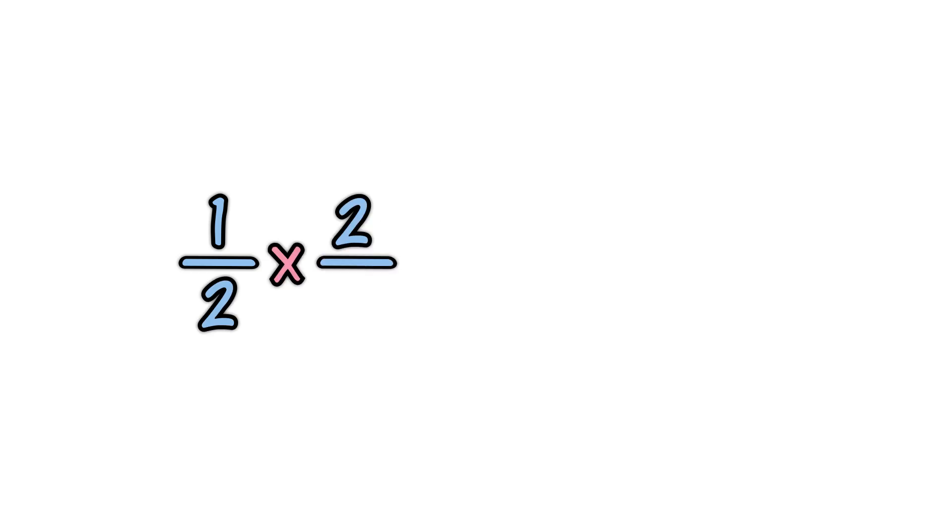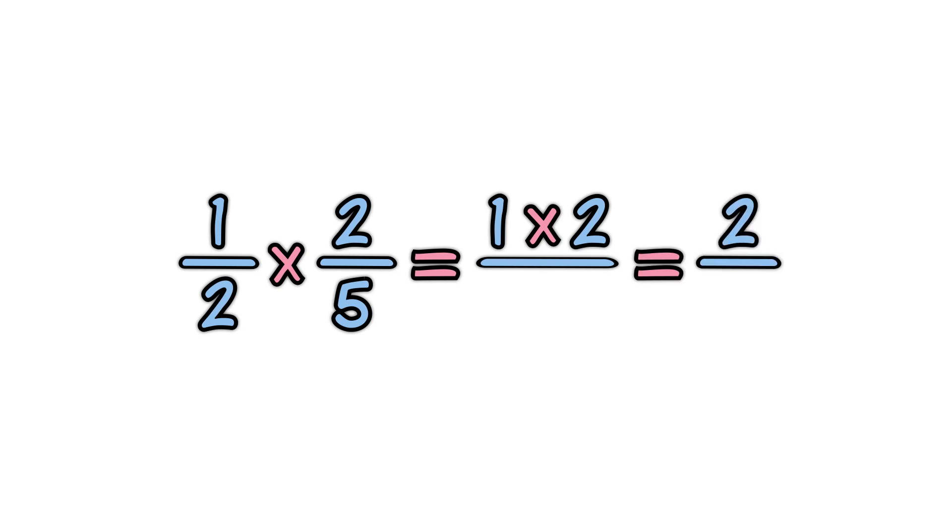1 half times 2 fifths. Multiply the top numbers, the numerators. Multiply the bottom numbers, the denominators. Simplify the fraction. 2 tenths becomes 1 fifth.